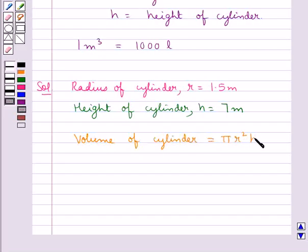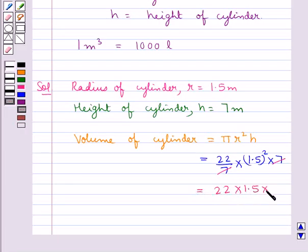We know that volume of cylinder is equal to pi r square h. Now we shall substitute the values for the radius r and the height h. So this is equal to pi, that is 22 upon 7, multiplied by r square, that is 1.5 the whole square, multiplied by the height h, that is 7.